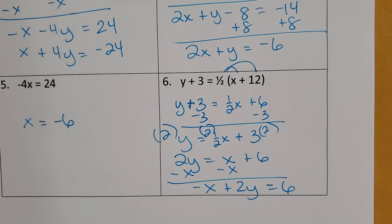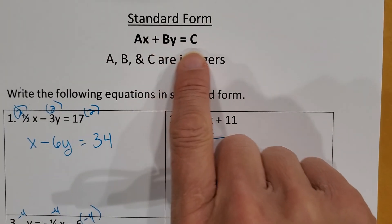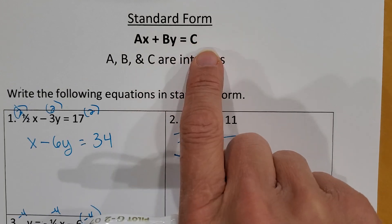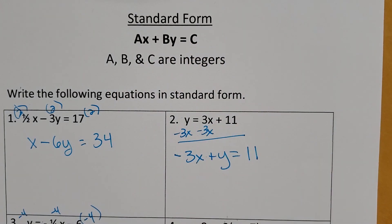And that is how you change linear equations to standard form. Remember, AX plus BY equals C, X and Y on the left, number on the right, and they have to be integers. Good luck with that. M squared, signing out.